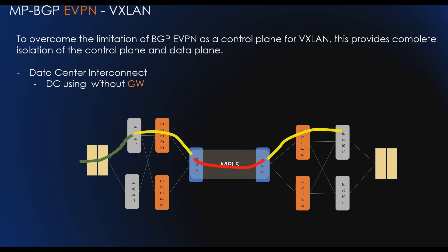The second scenario is data center interconnect without a gateway. In this case, data center interconnect devices do not need to maintain large MAC VRF and IP VRF tables, and do not need to terminate and process multi-homing routes. Instead, they relay messages for establishment of end-to-end label switched paths such as Inter-AS option B. This covers why we need EVPN in the data center and all the benefits it brings, with a deep dive into EVPN packet flow coming next.